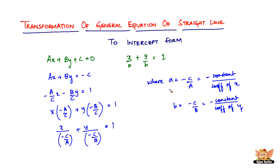So that is how you transform the general equation of a straight line ax plus by plus c equal to 0 to the intercept form x by a plus y by b equals 1. I will see you in the forthcoming videos with more transformations of the general equation of a straight line.